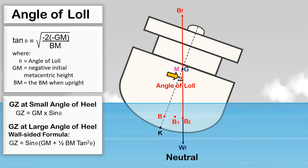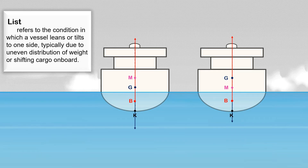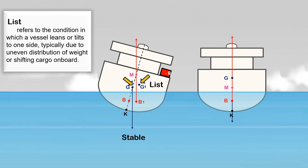At first glance, it seems that the ship is listing. But angle of loll is different from list. List refers to the condition in which a vessel leans or tilts to one side, typically due to uneven distribution of weight or shifting cargo on board. For example, if the ship is in stable condition and we add a weight to one side, the ship's center of gravity will move towards the center of gravity of the weight being loaded. The new center of gravity is at G1, which is off the centerline, causing the ship to list toward that side. While at angle of loll, the ship's center of gravity remains along the centerline — it is a result of the ship being in an unstable condition.